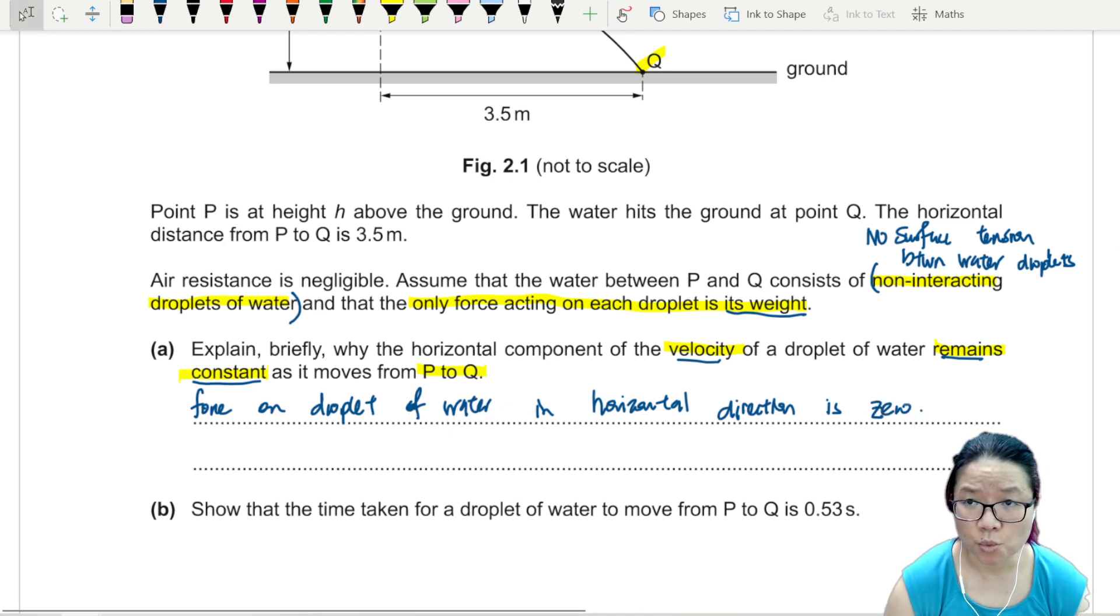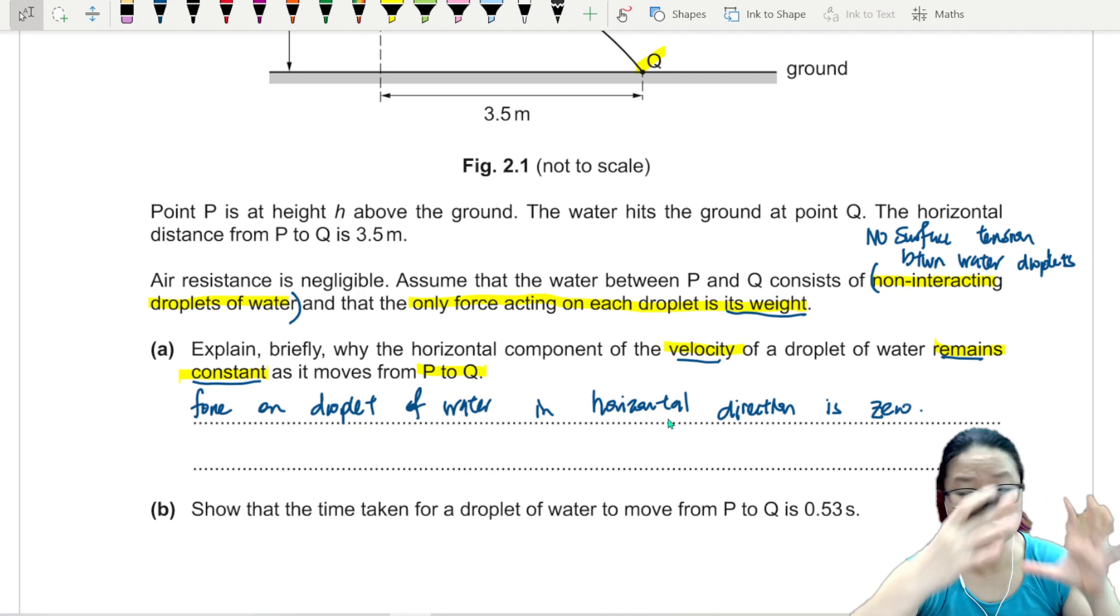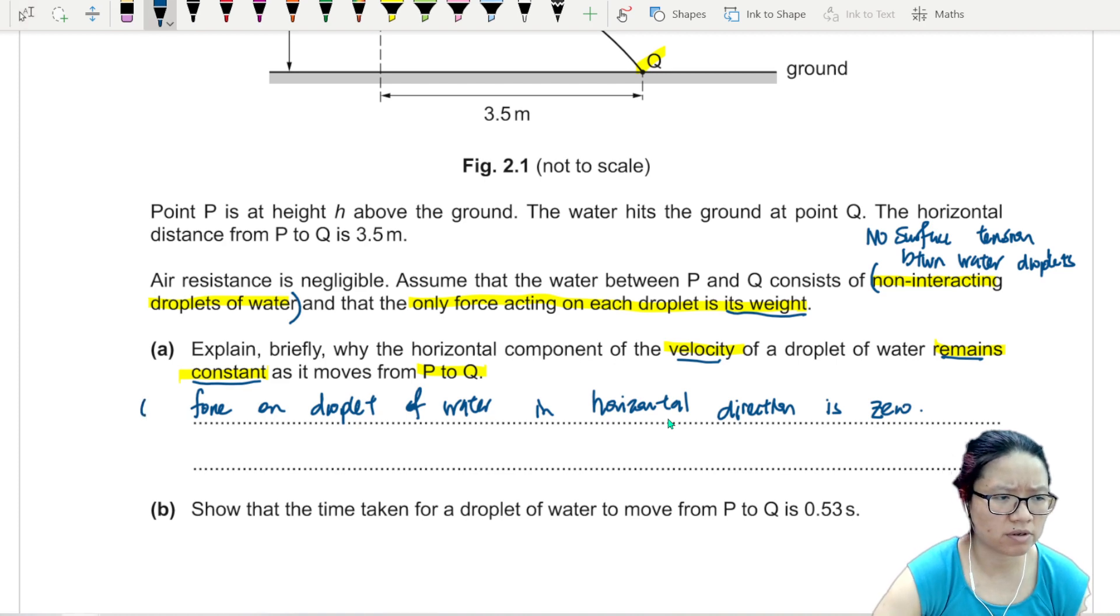Remember, whenever there is a change in velocity, there is always a net force. Think of question one. In question one, your sphere drops at constant speed. No net force, they cancel out. And in this case, you can even add the word net if you want. Net force on the droplet of water in the horizontal direction is zero. But the main idea here is the force on the droplet is zero. One mark.